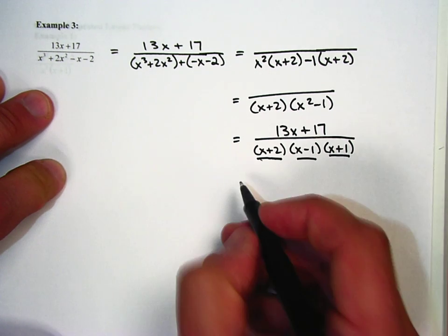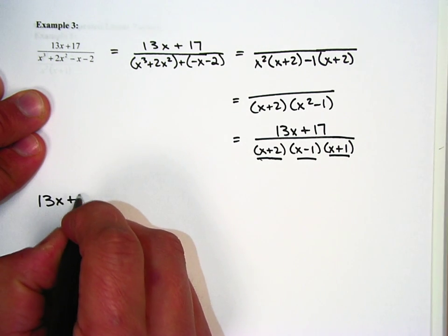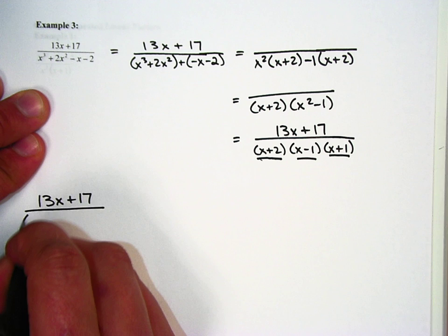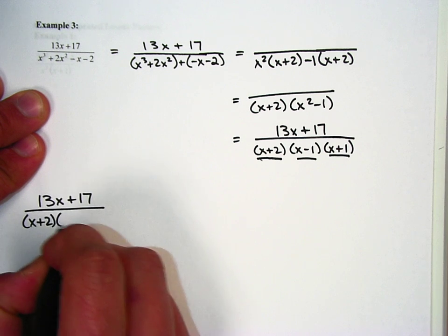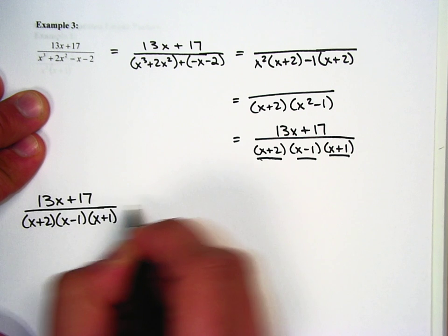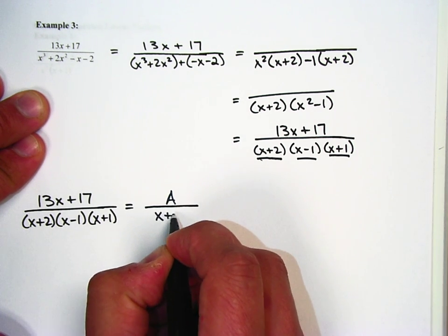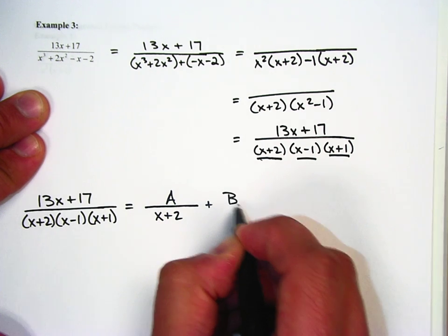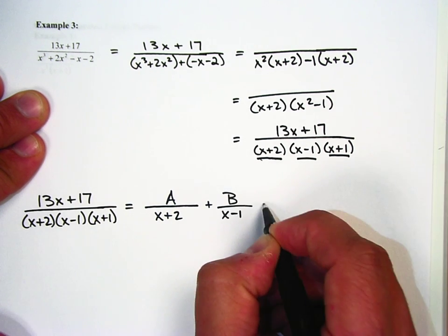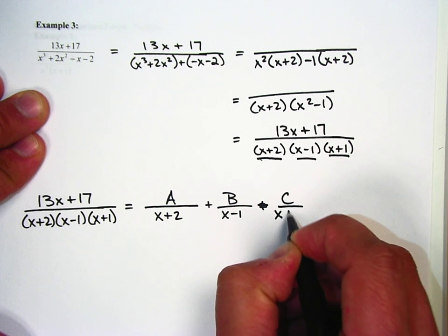So when I break this up, what's going to happen is I'm going to have 13x plus 17 over x plus 2, set that equal to A over x plus 2, plus B over x minus 1, plus C over x plus 1.